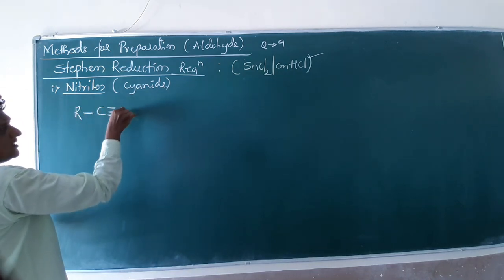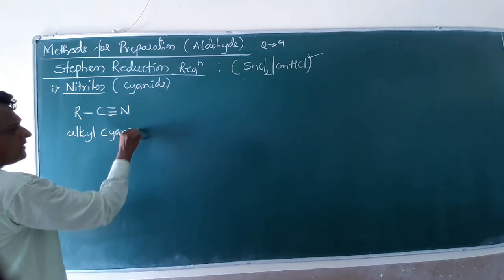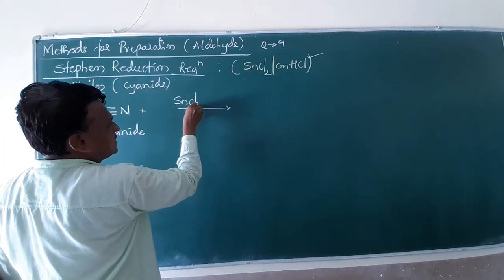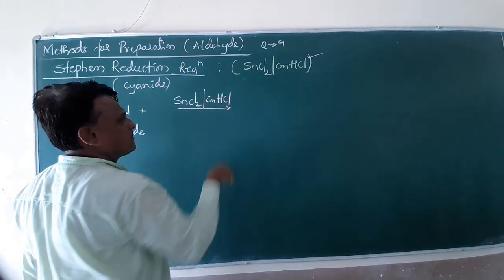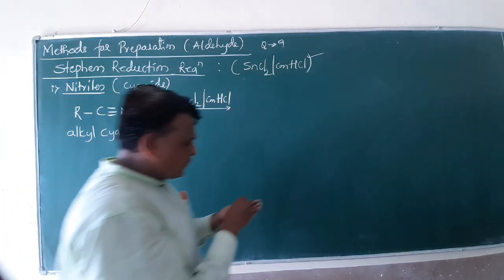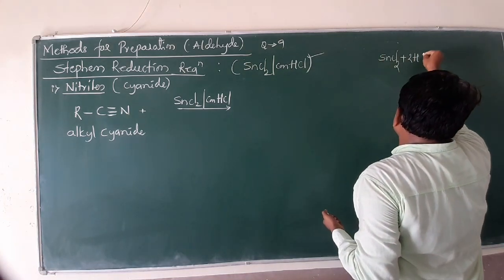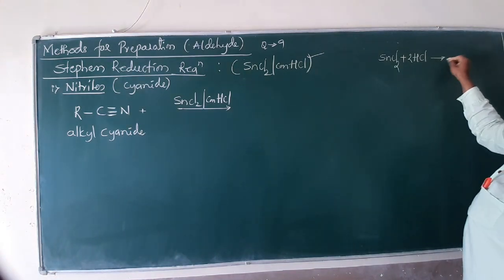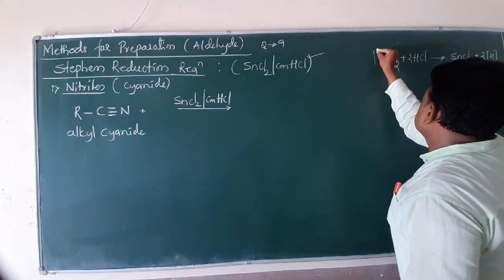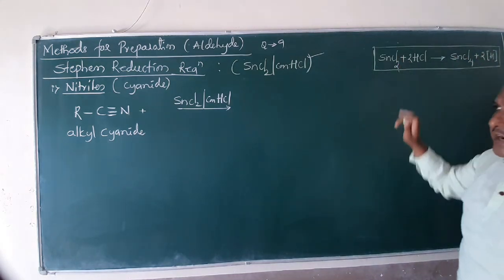You keep in your mind already we know nitriles and cyanides. So how to prepare friends? This is R-C triple bond N. This is your corresponding alkyl cyanide. When this alkyl cyanide is strongly treated with tin chloride, SnCl2, in presence of concentrated HCl, tin chloride with concentrated HCl generates nascent hydrogen. If you want this reaction to keep yourself, SnCl2 is reacting to 2 moles of HCl to form the product SnCl4 and to generate 2 nascent hydrogen. This is the simple part how to generate nascent hydrogen by using tin chloride.